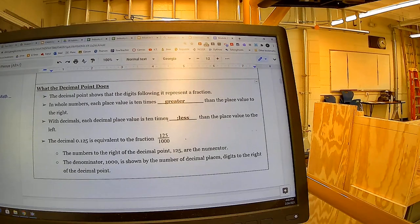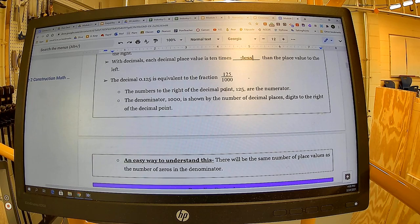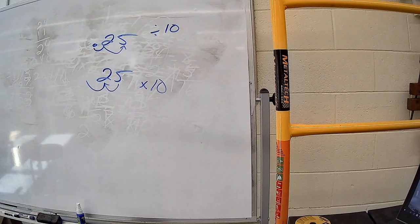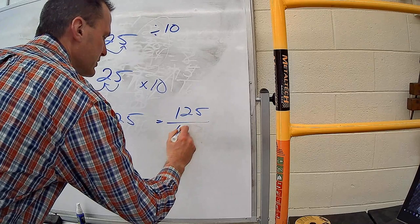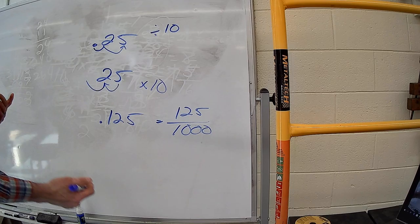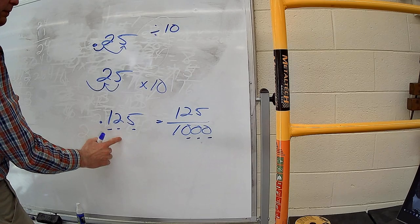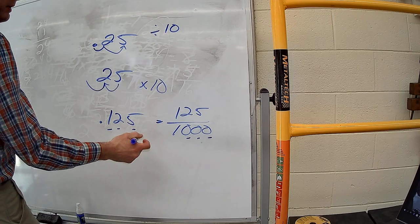The decimal equivalent to 125 thousandths is equivalent to the fraction 125 over 1000. The number to the right of the decimal point is 125, and the denominator is 1000 — we have 125 thousandths. An easy way to understand this: the number of place values equals the number of zeros. We have three zeros, and we have three decimal places, so three decimal places equals one thousand.